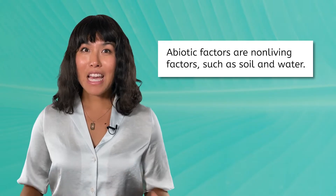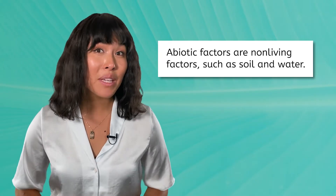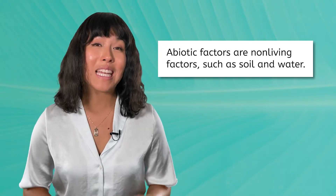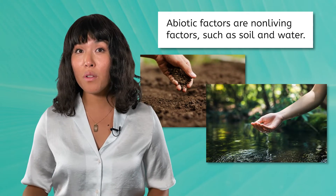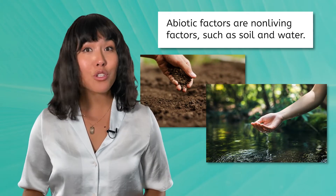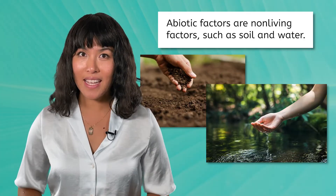Now that we know what biotic factors are, and from the introduction we know what the prefix A means, what do you think abiotic factors in an ecosystem are? Abiotic factors are the non-living factors in an ecosystem. Examples include soil and water, as well as temperature, light, and humidity.